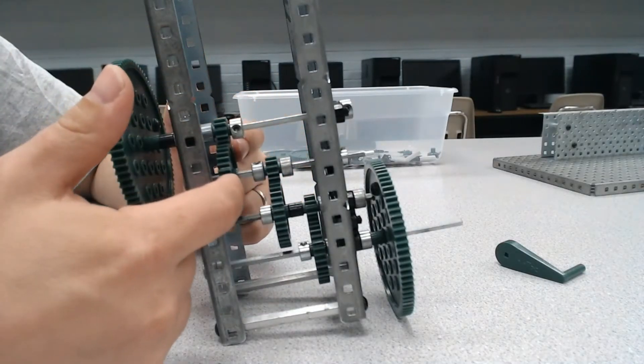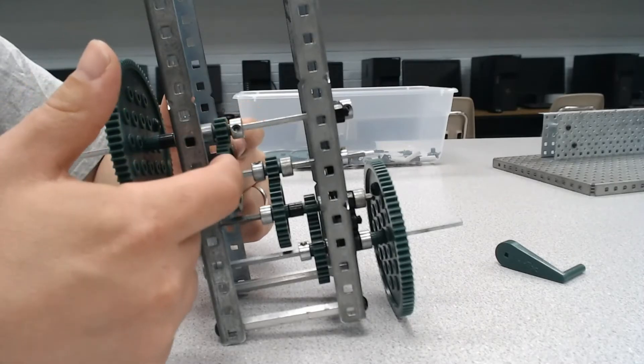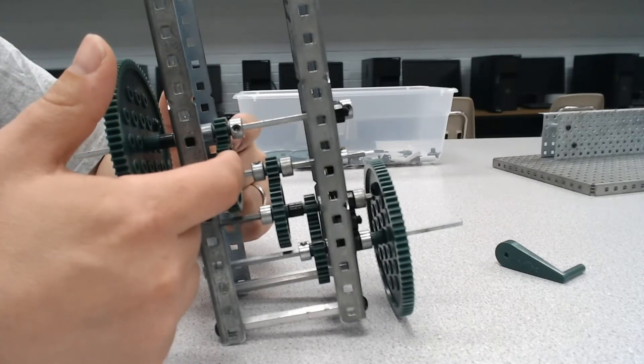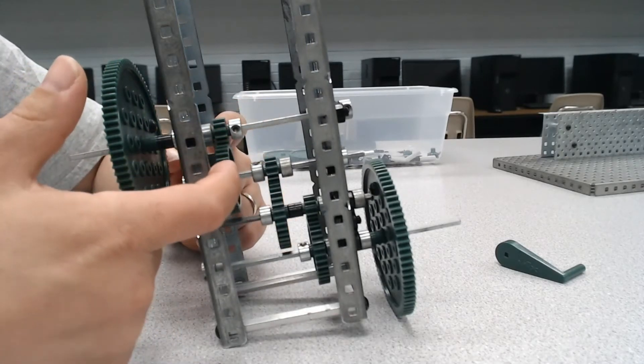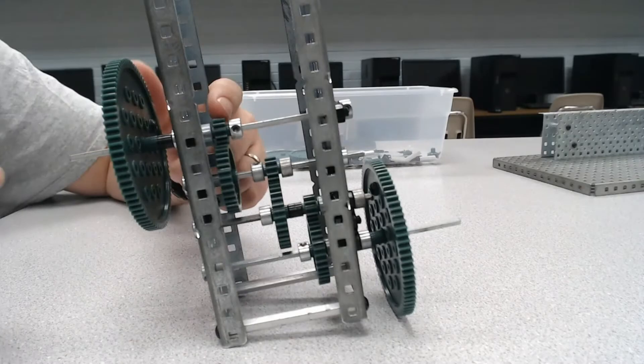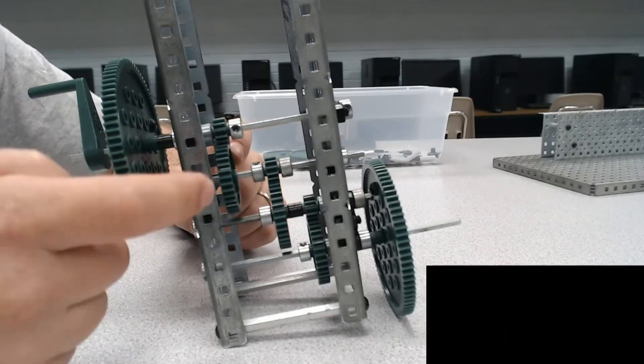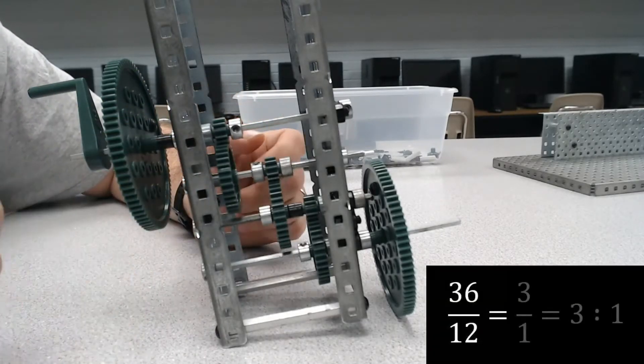But when we come down to there, we're on a different drive shaft. So there's actually going to be a gear ratio other than one-to-one at this point. So if we have a 36-tooth here and a 12-tooth here, and this is my input, 36 divided by 12 equals three-to-one.